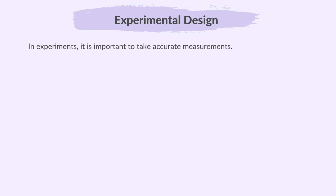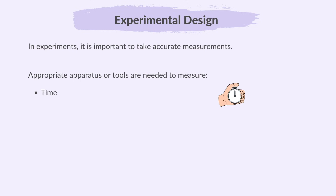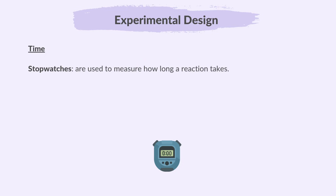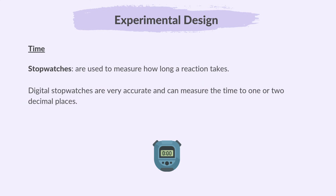In experiments, it is important to take accurate measurements. Let's look at the tools or apparatus used for measuring time, temperature, mass and volume. Stopwatches are used to measure how long a reaction takes. Digital stopwatches are very accurate and can measure the time to one or two decimal places. Time is measured in seconds or minutes.